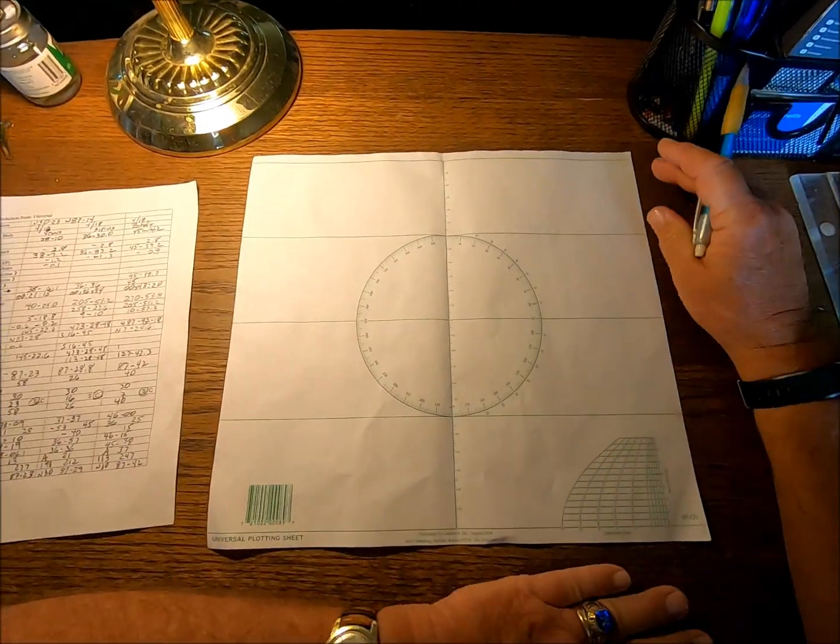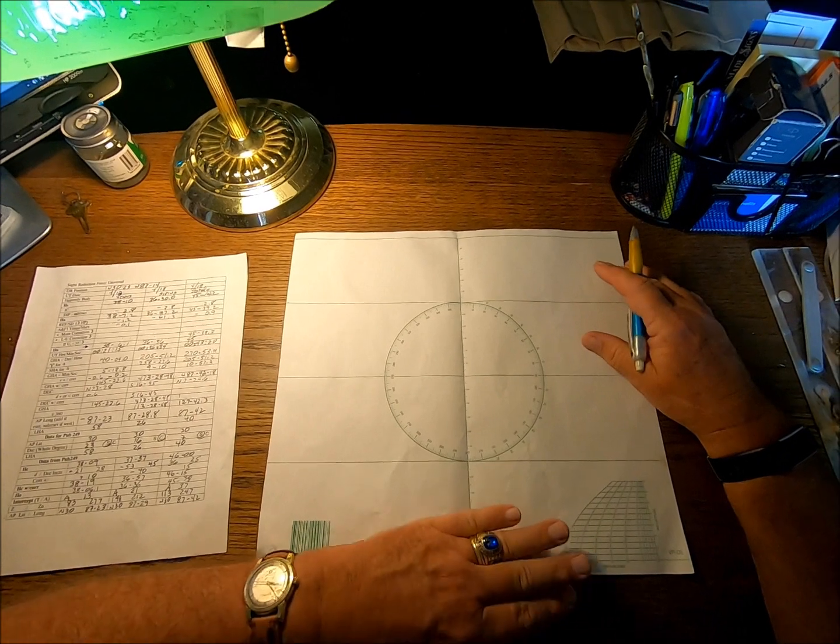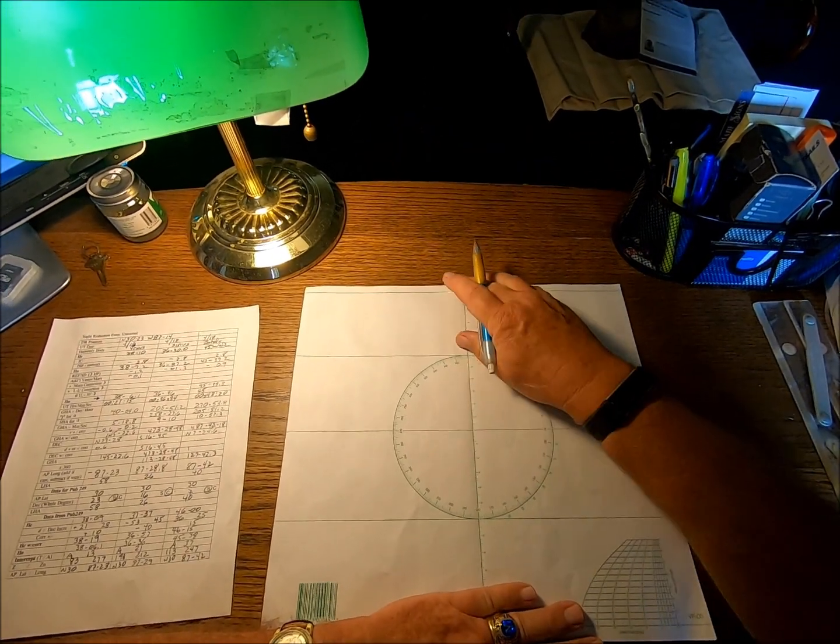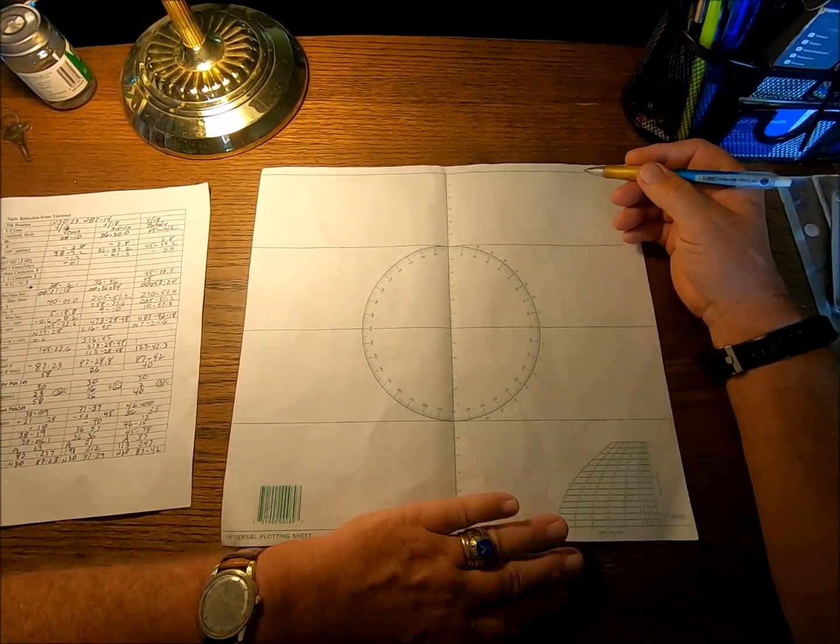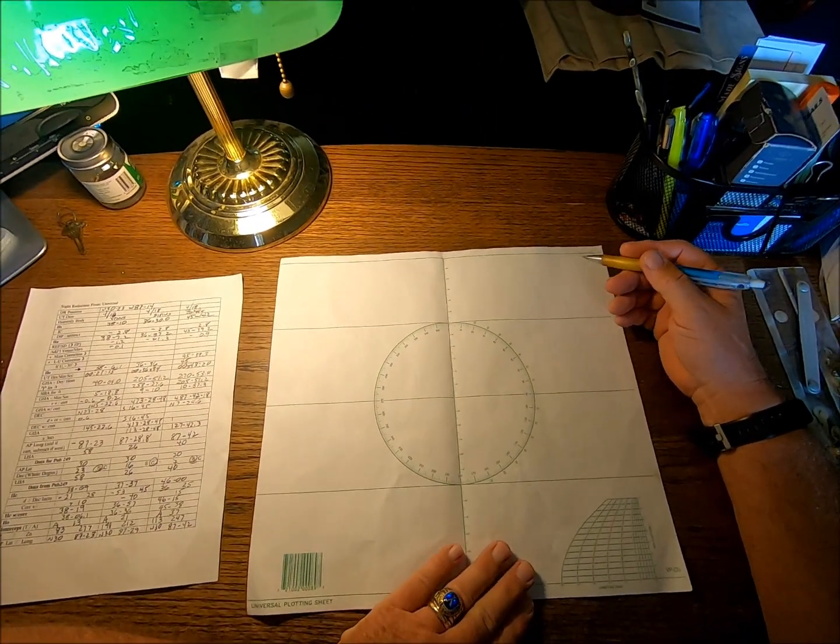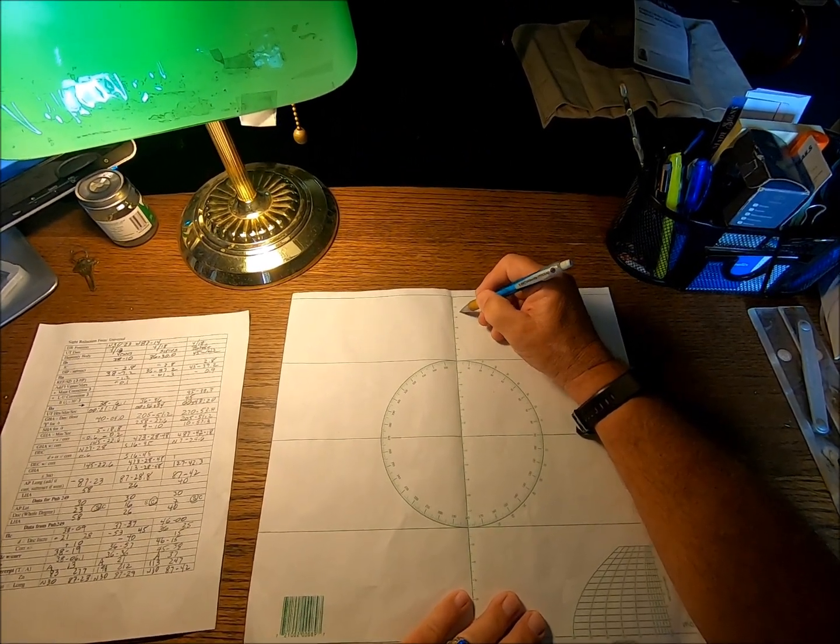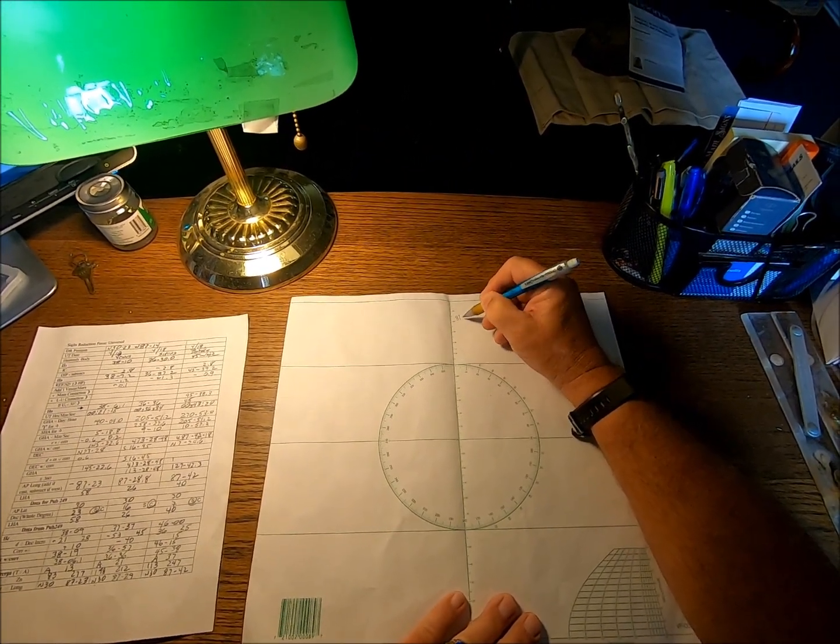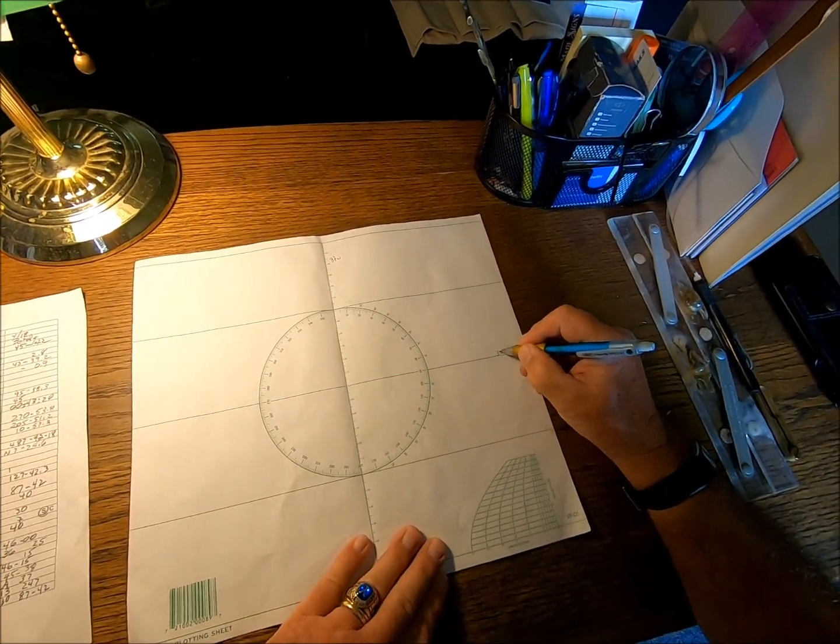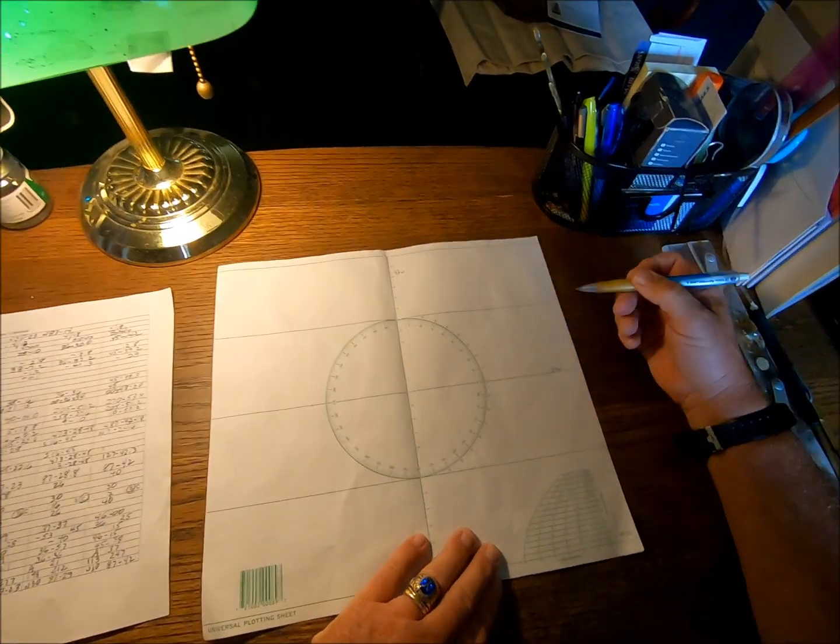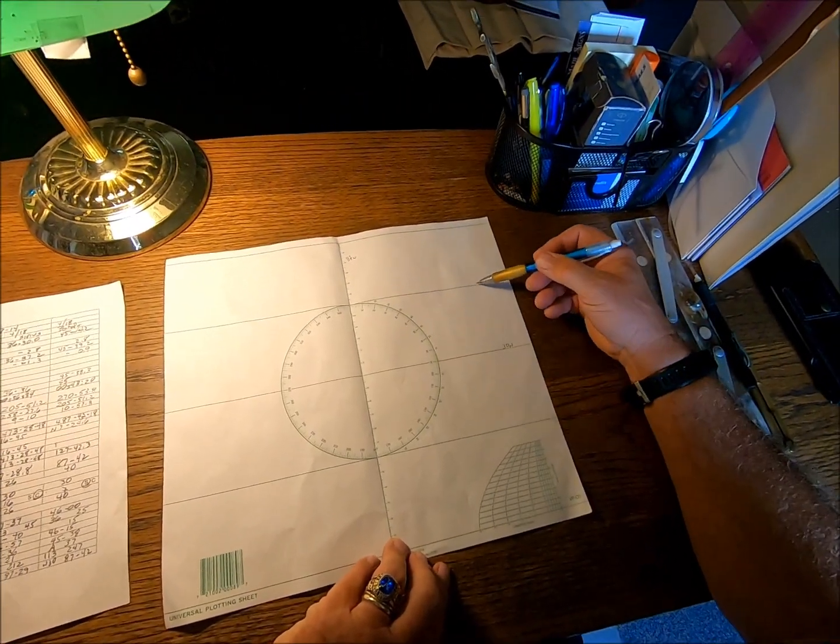Okay, we're going to plot it on this universal plotting sheet. I'm going to show you how to do it and we'll see how close I end up. If I can get a triangle out of this thing, if not, I'll be pretty embarrassed. We're going to label this 87 west and 30 degrees north on our latitude. Of course, these latitude lines are 60 nautical miles apart.